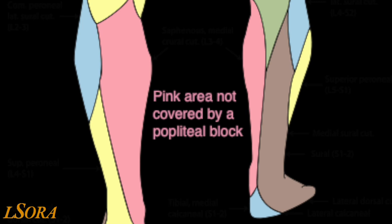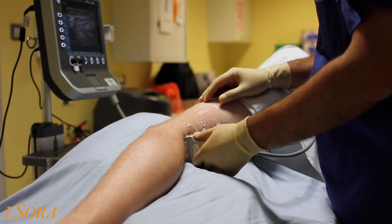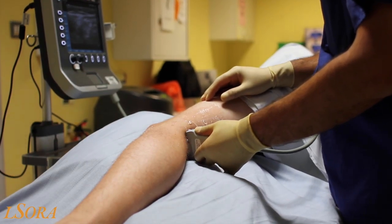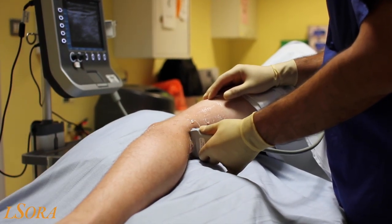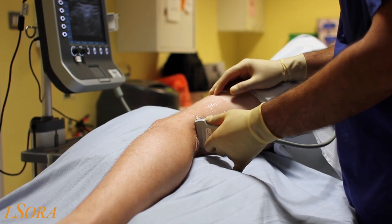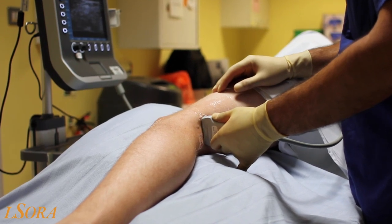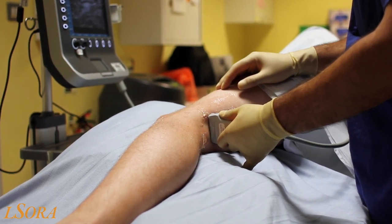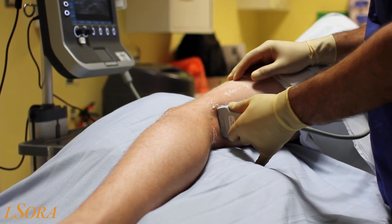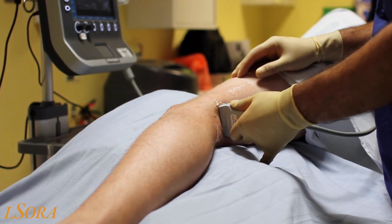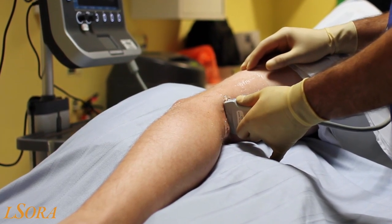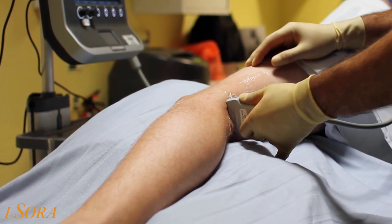In order to scan for the popliteal sciatic nerve block, the patient can be supine, prone, or lateral. You can see here the patient is positioned in the lateral position with a pillow between their knees for patient comfort.